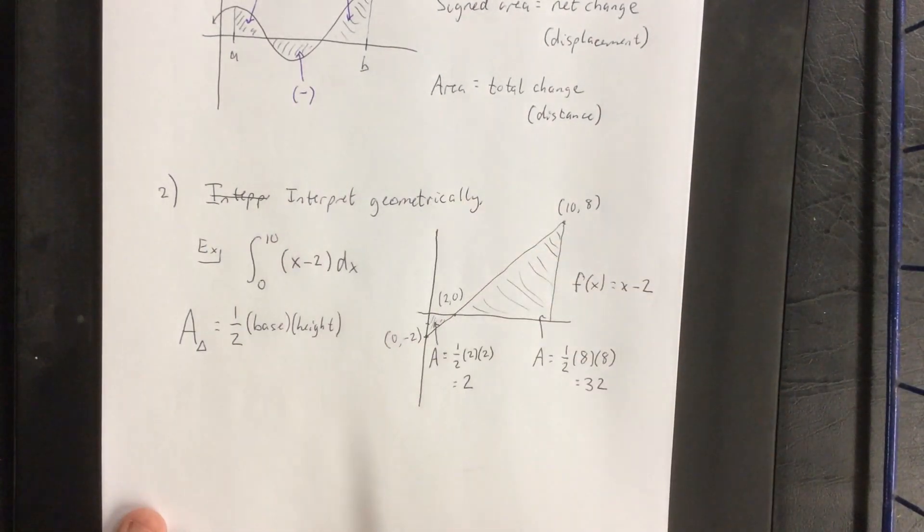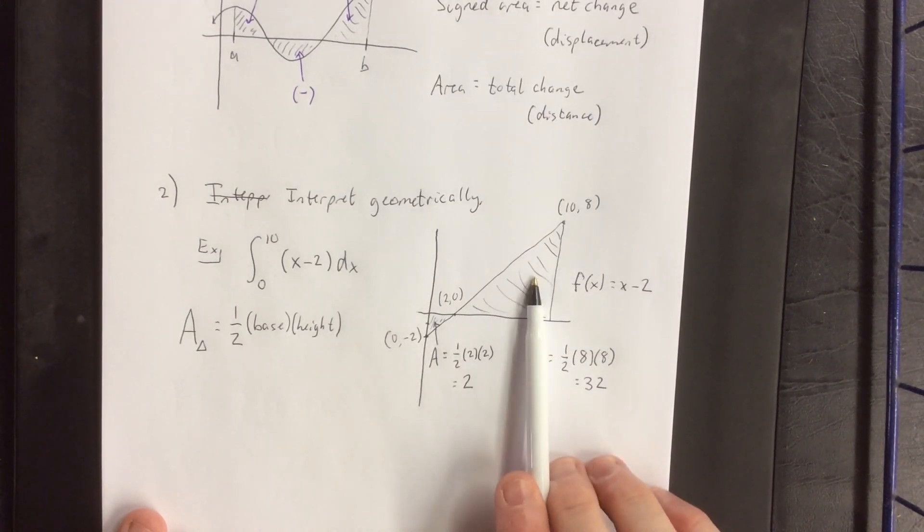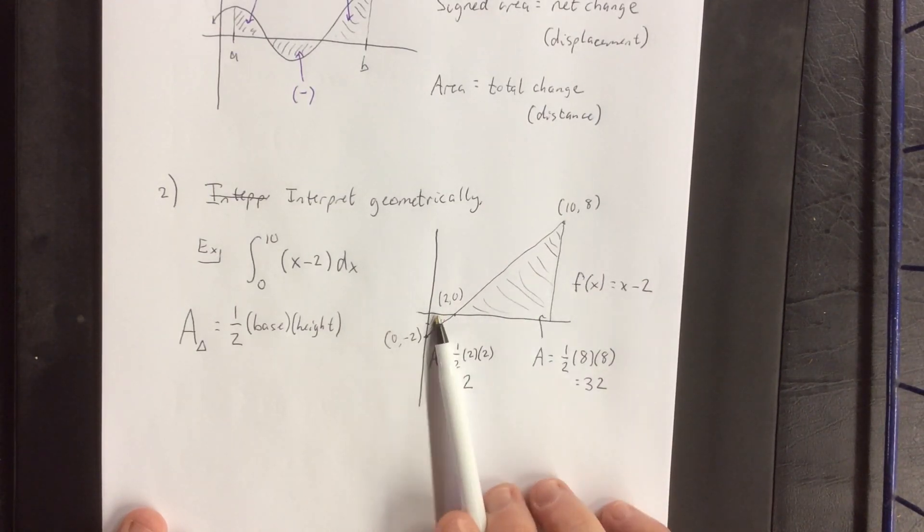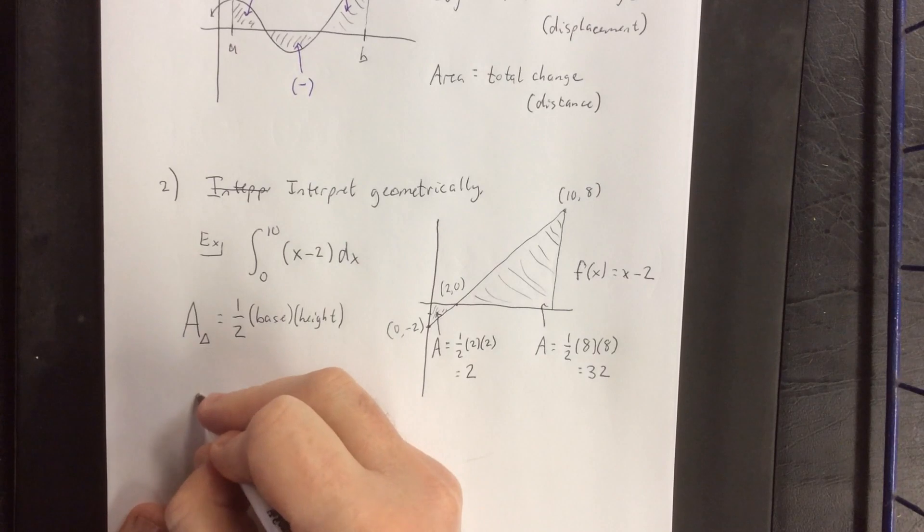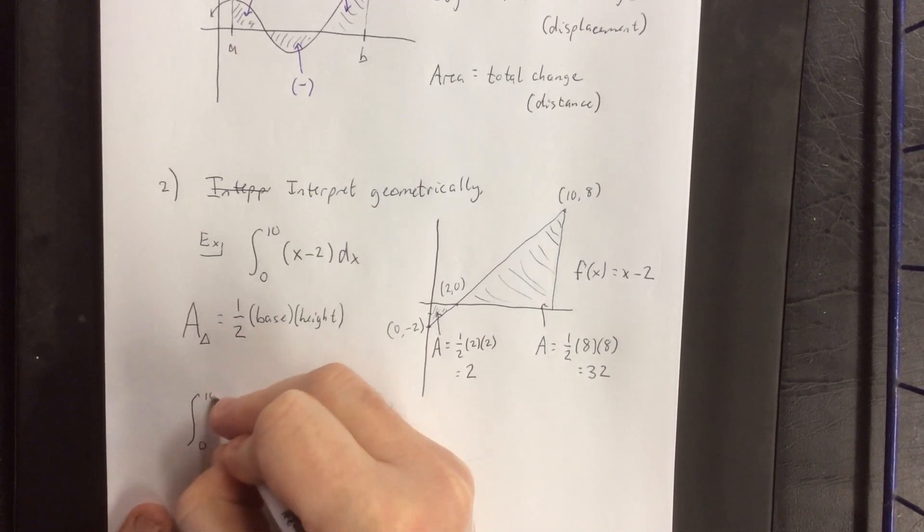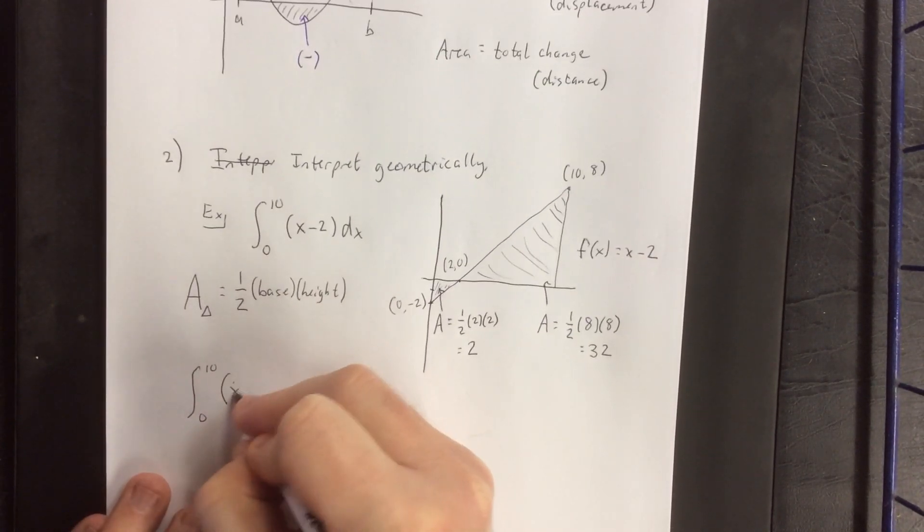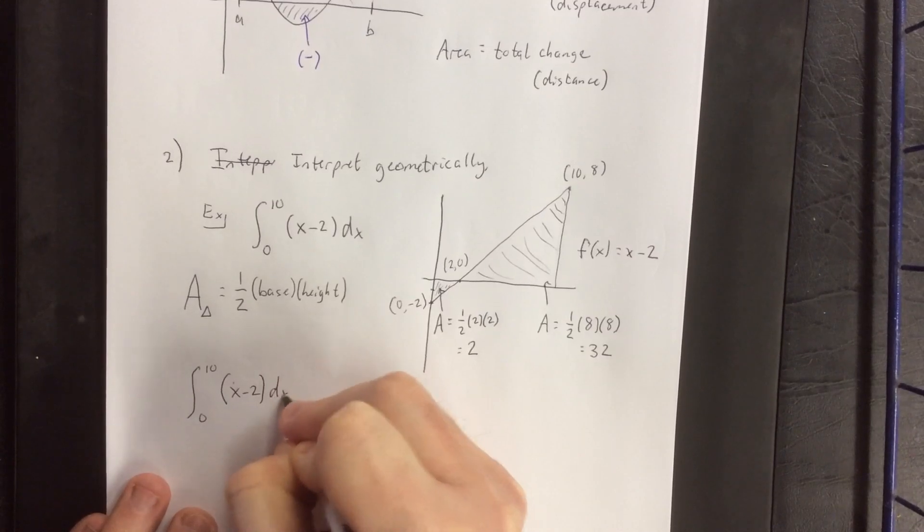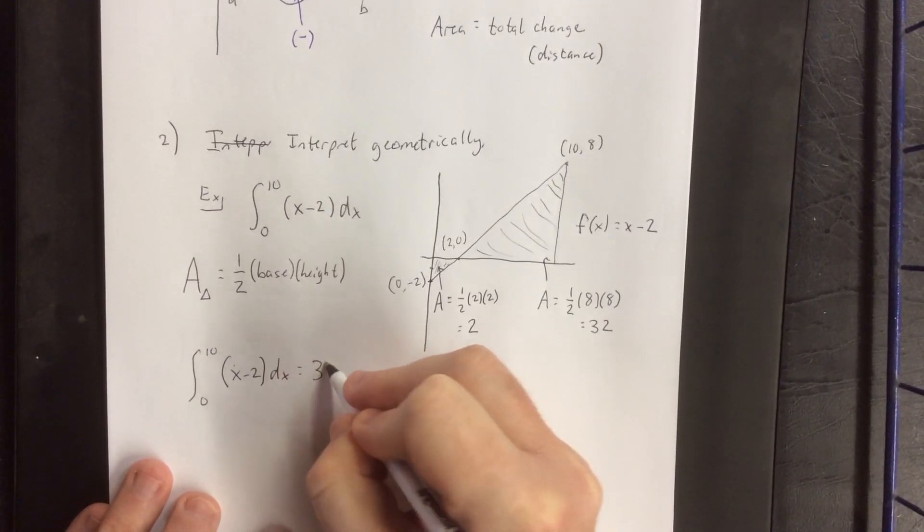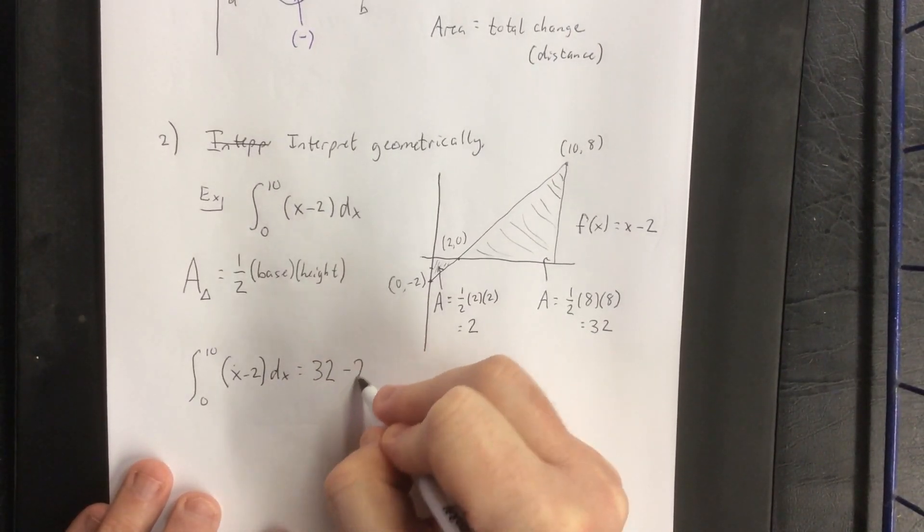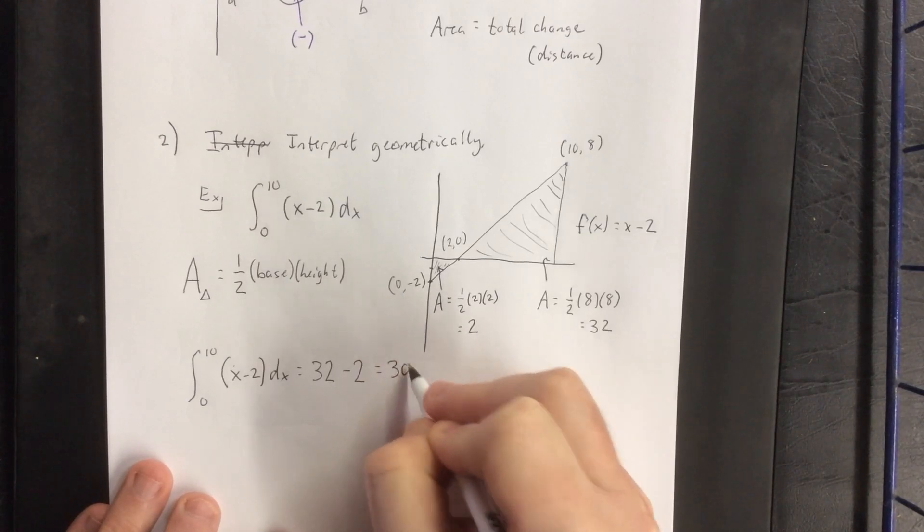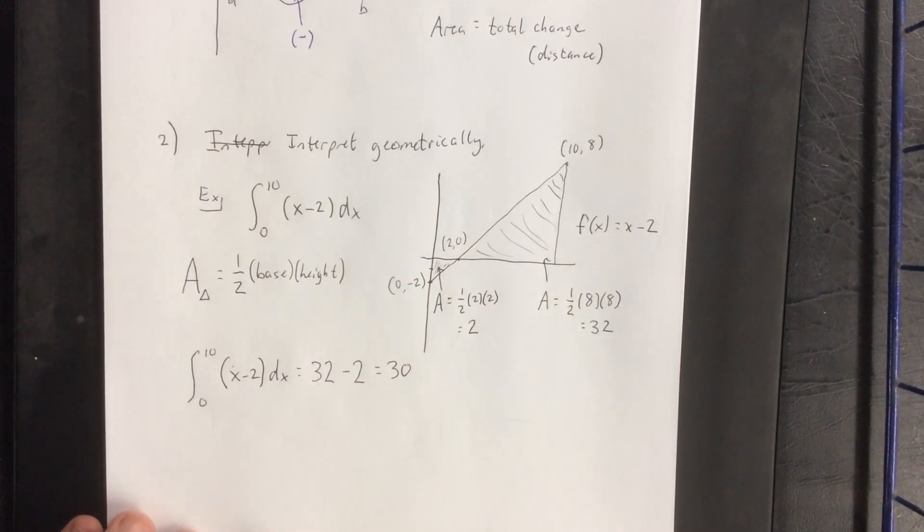Now as I mentioned above though, this area will be accounted for in a positive fashion, this area will be accounted for in a negative fashion. So the total signed area in this case would be equal to the positive 32 minus 2. The value of this definite integral interpreted geometrically would be 30.